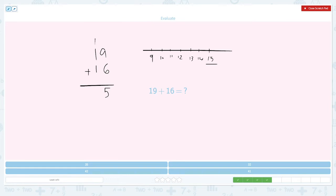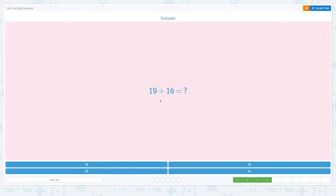So 9 plus 6 equals 15. Let me put 5 in one's place and move the tens over here. So I have one more 10. 1 plus 1 plus 1 equals 3. So the answer is 35. Awesome.